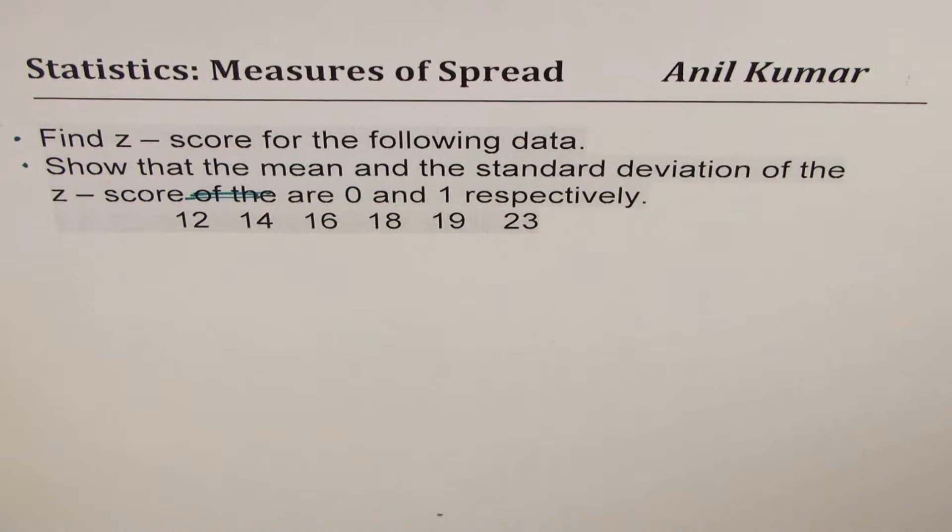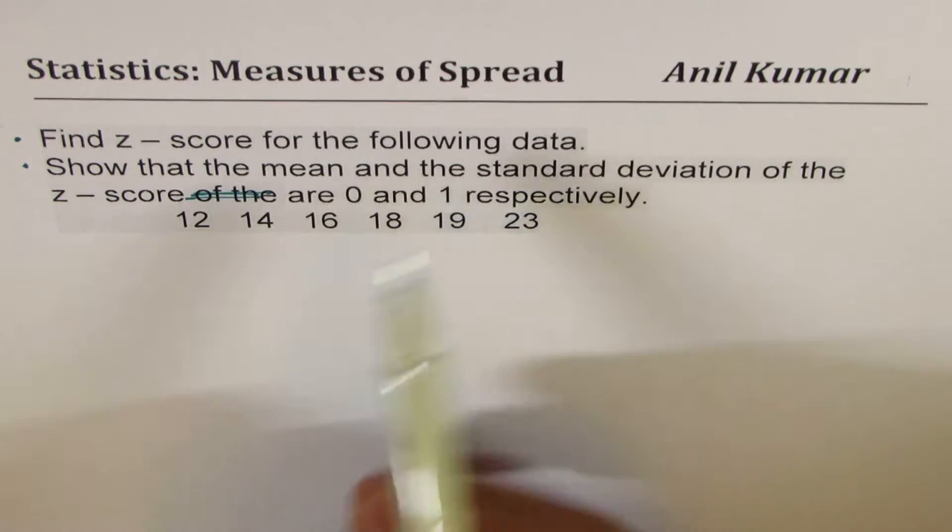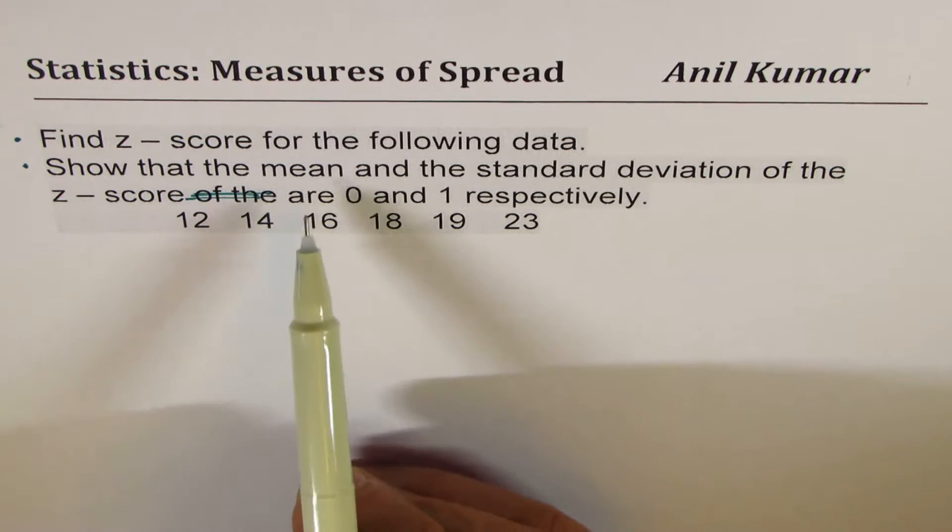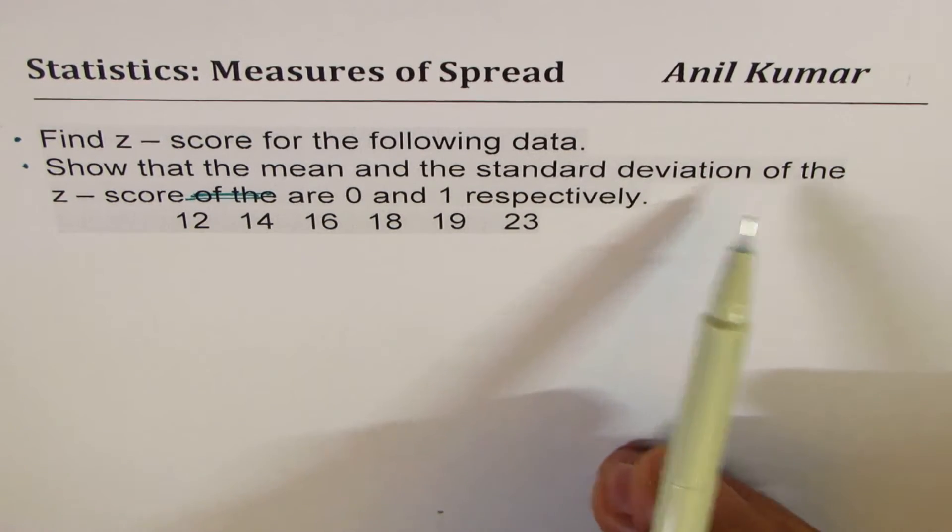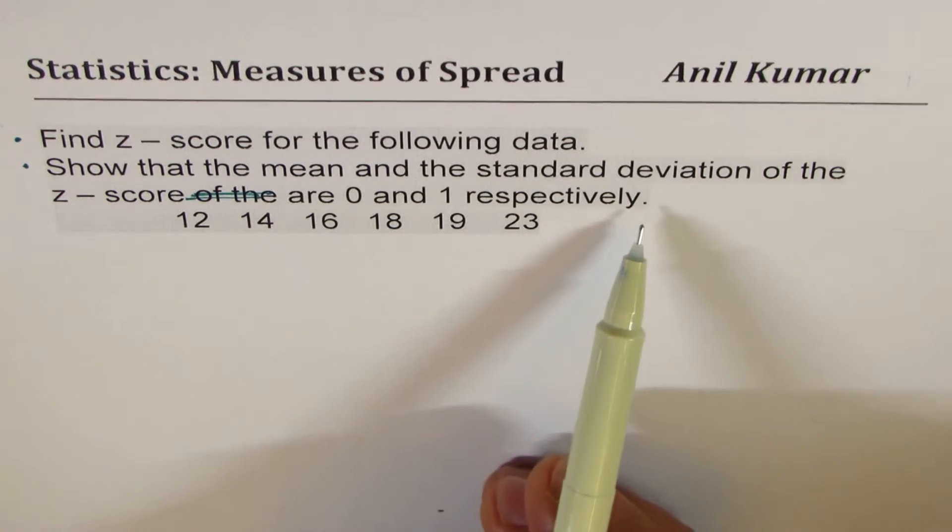I'm Anil Kumar sharing with you a very important question on z-score. I'd like you to pause the video, copy the question, try it out, and then look into my suggestions. The question here is, find z-score for the following data. And the second part is, show that the mean and the standard deviation of the z-scores are 0 and 1 respectively.